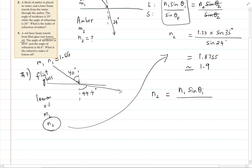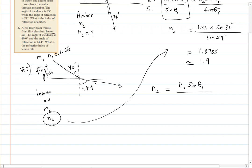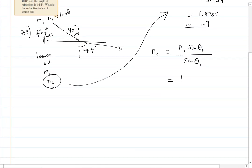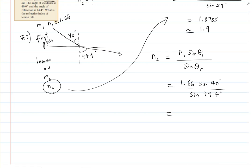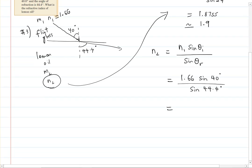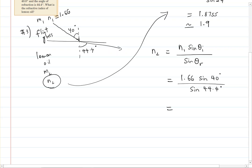To clarify the notation: you can call the angles θi and θr, or θ1 and θ2. So n2 = n1 sin(θi) / sin(θr). n1 is 1.66, θi is 40 degrees, and θr is 44.4 degrees. On the calculator: 1.66 times sine 40 divided by sine of 44.4 degrees.